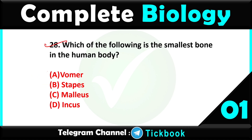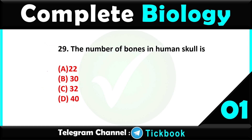Question number twenty-eight: which of the following is the smallest bone in the human body — option number B is the right answer: stapes. Question number twenty-nine: the number of bones in the human skull is — option number A, 22.